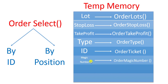For magic number, use OrderMagicNumber. The magic number is used when we have several open orders for a specific pair, each opened based on some strategy. When certain conditions are true, we may want to close only orders with magic number 1000 but keep orders with magic number 1001 open.